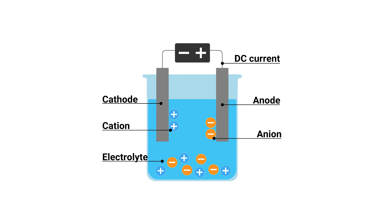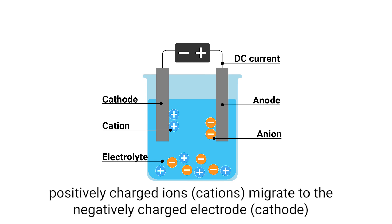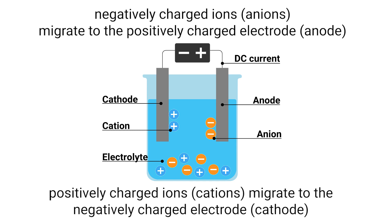During electrolysis, positively charged ions or cations will migrate to the negatively charged electrode, known as the cathode, and negatively charged ions, known as the anions, will migrate to the positively charged electrode, the anode.